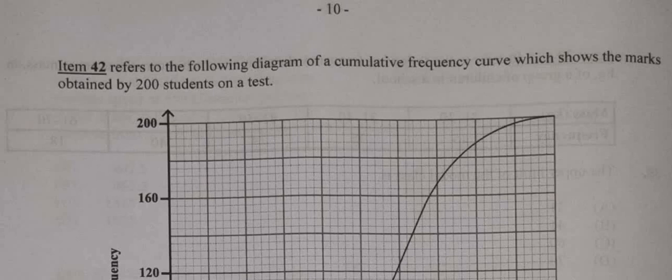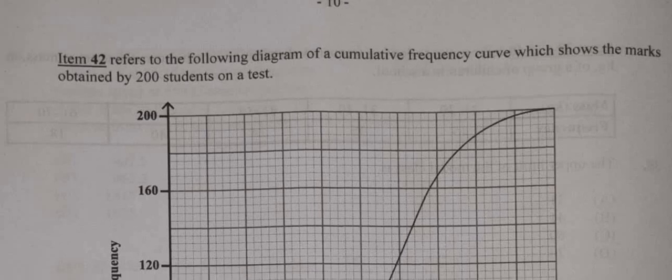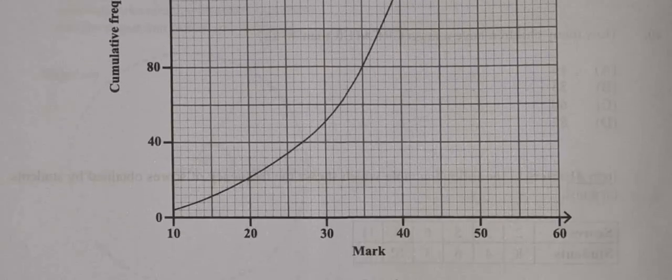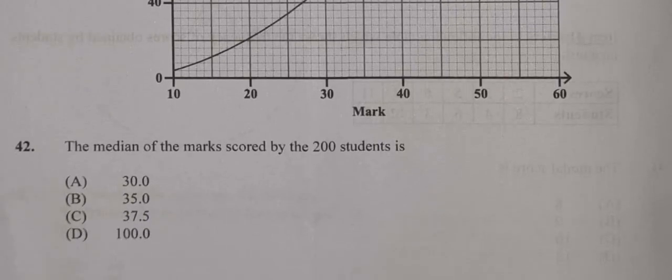Okay, so item 42, we're dealing with a cumulative frequency curve that shows the marks obtained by 200 students on a test. Let's examine it. And we're asked to find the median of the marks scored by the 200 students.